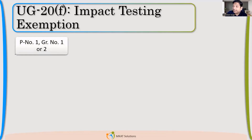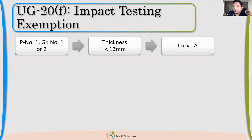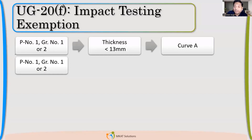What UG20F talks about is that if my material is P1, group number 1 or 2, there are multiple requirements. If I have a thickness less than 13 mm and my material falls into curve A, then I am exempted from impact testing. All materials fall into different categories based on whether they are normalized or not normalized.